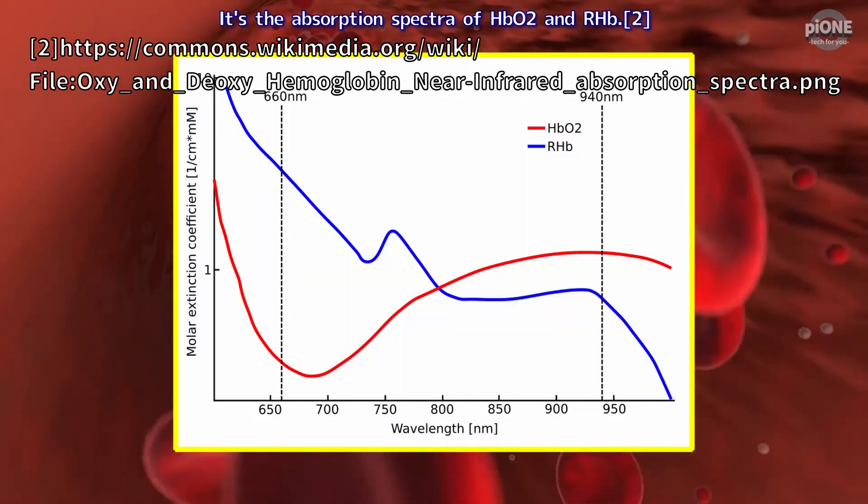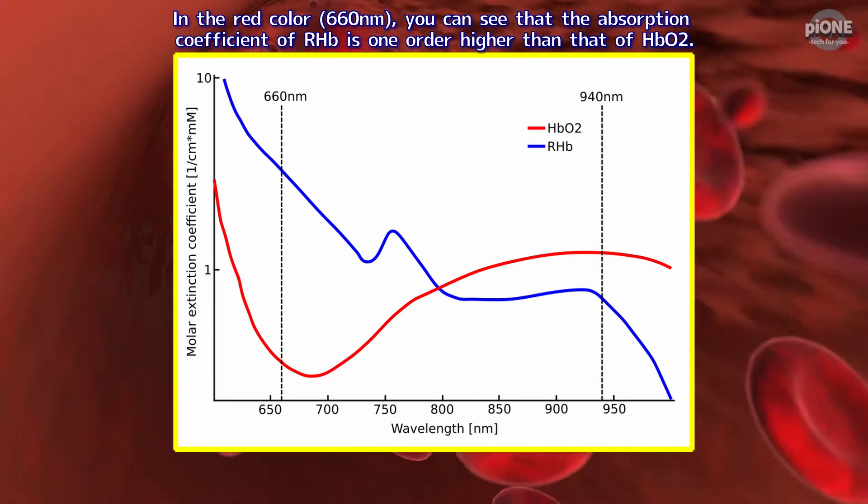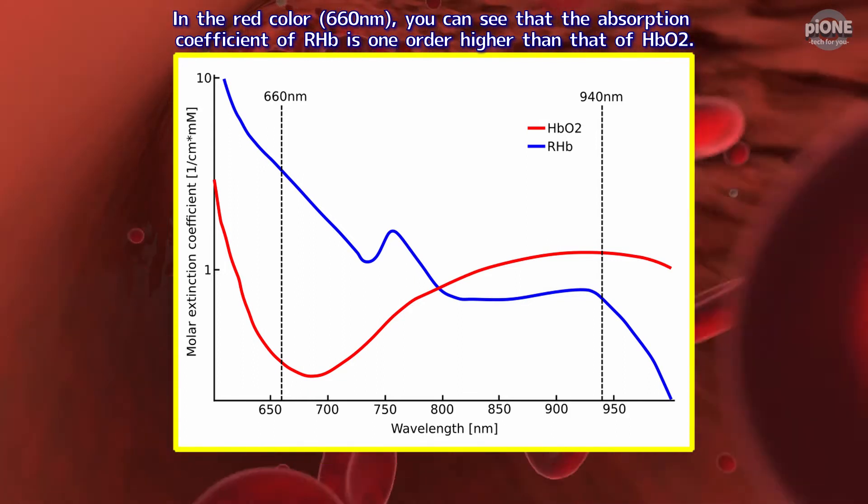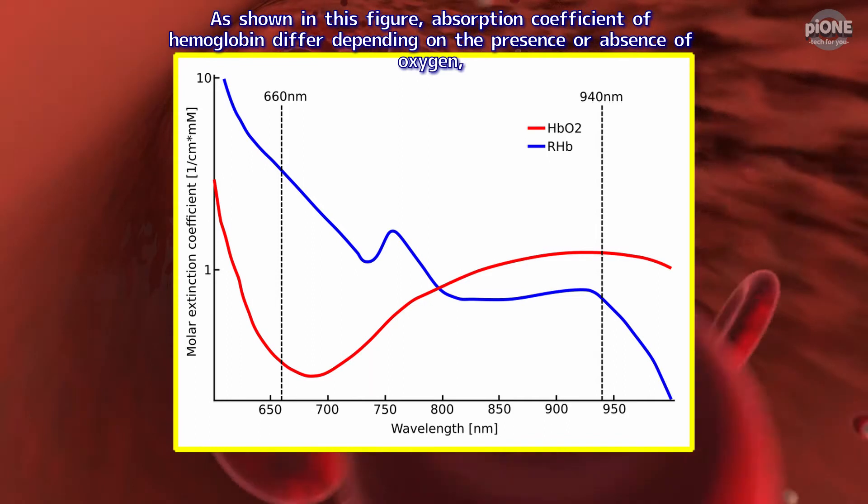It's the absorption spectra of HbO2 and Rhb. In the red color, 660 nanometers, you can see that the absorption coefficient of Rhb is one order higher than that of HbO2. As shown in this figure, absorption coefficient of hemoglobin differ depending on the presence or absence of oxygen.